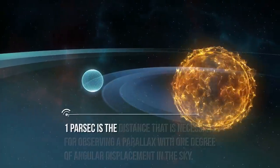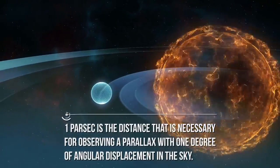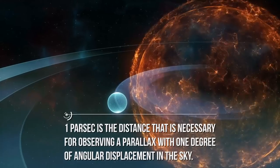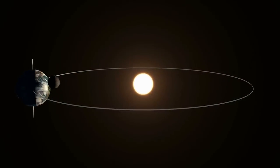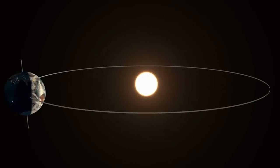The definition of the unit parsec is derivable by this technique. One parsec is the distance that is necessary for observing a parallax with one degree of angular displacement in the sky. Parallax can give information of distances lower than 500 parsec.